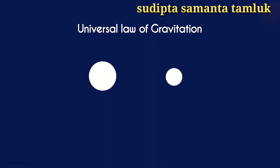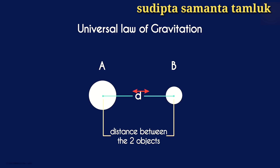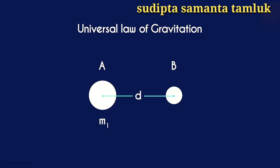Say there are two objects A and B separated by a distance d. The distance between the centers is considered the distance between the two objects, not the surface-to-surface distance. Assume that the mass of object A is m1 and that of object B is m2. As object A is bigger, let's assume m1 to be greater than m2.